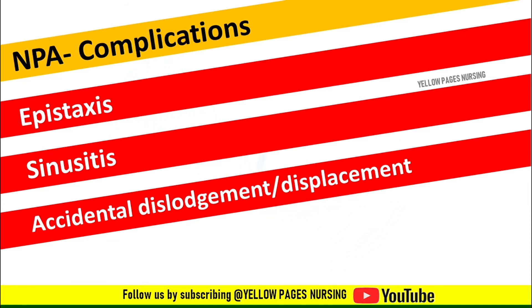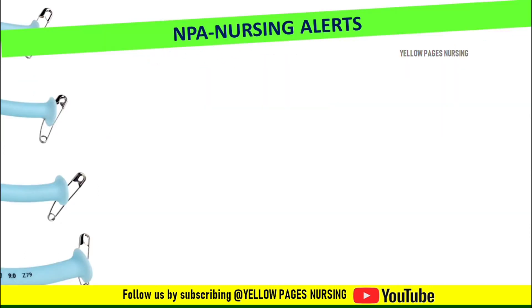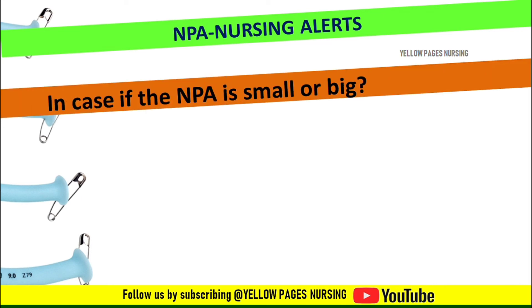Complications of nasopharyngeal airway include: epistaxis, sinusitis, accidental dislodgement or displacement, nasal mucosa injury, and secondary blood aspiration. Regarding nursing responsibilities: if the airway is too short it will be ineffective; if too long, it may obstruct the larynx and cause laryngospasm, retching, and vomiting. Hence it is essential to select the appropriate size using the previously mentioned external facial measurement.